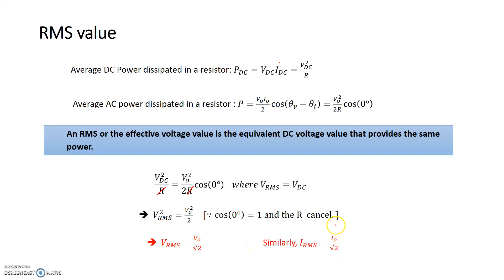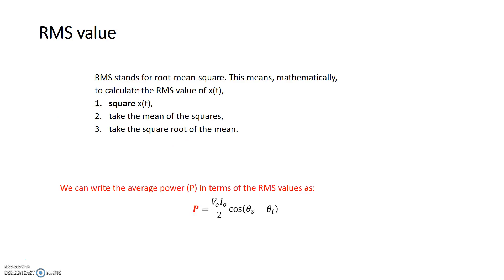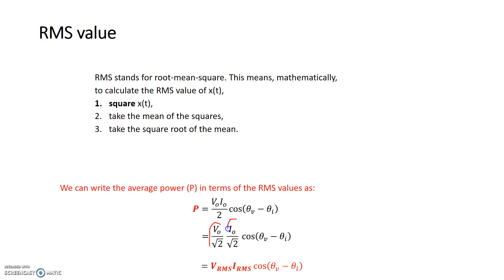Similarly, I_RMS is the peak current divided by √2. Root mean square means: take the square of x(t), take the mean of those squares, then take the square root — that's the RMS. We can rewrite average power in terms of RMS: (v0·i0/2) = (v0/√2)·(i0/√2) = V_RMS · I_RMS, since √2·√2 = 2. We'll talk about reactive power and other forms of power in the next video.